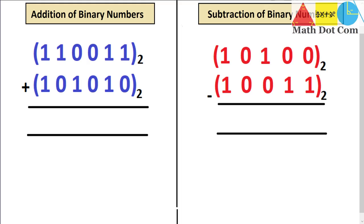Today's topic is the addition and subtraction of binary numbers. We will see how to add two binary numbers, and in the next lecture how to add three, four, or five binary numbers. The method will be the same but a little bit tricky. We'll start with the basics and move towards the complex ones, beginning with addition and then moving to subtraction.